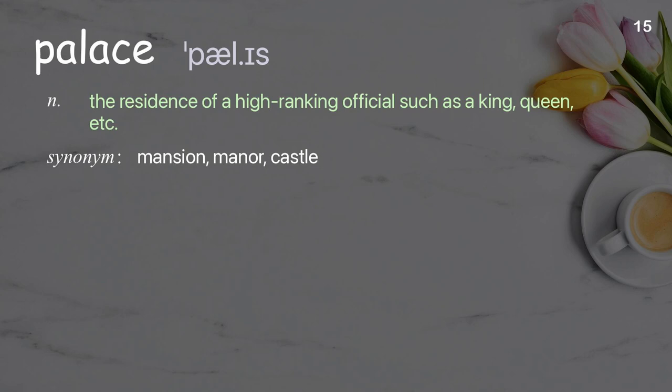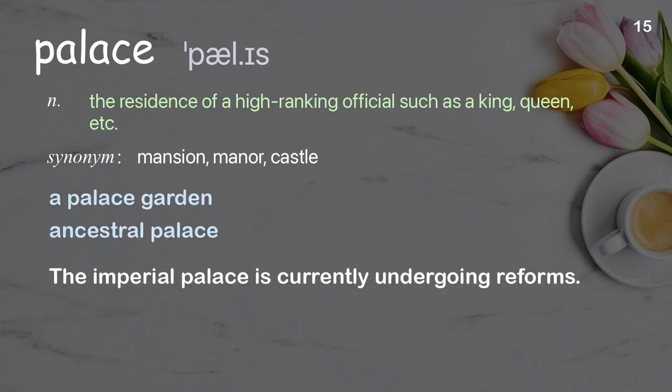Palace: The residence of a high-ranking official, such as a king, queen, etc. Examples: a palace garden, ancestral palace. The imperial palace is currently undergoing reforms.